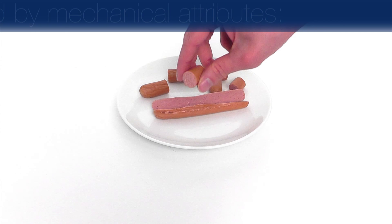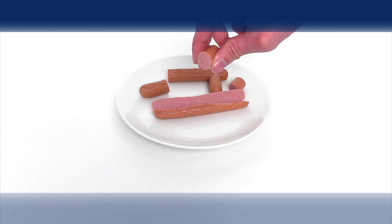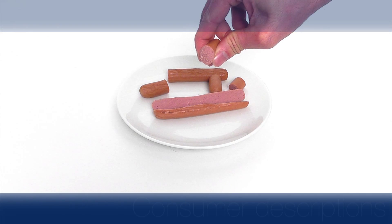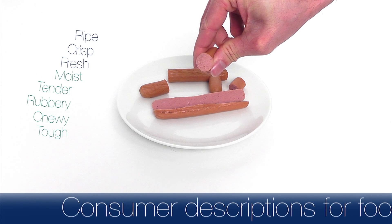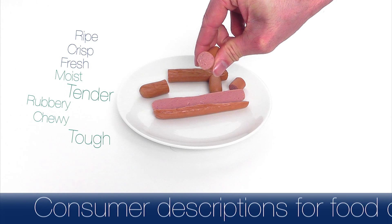A consumer may describe the sensory quality of food with different terms, for example: ripe, crisp, fresh, moist, tender, rubbery, chewy or tough.